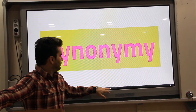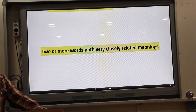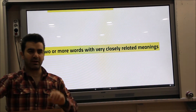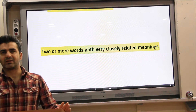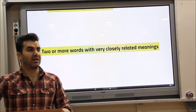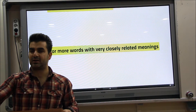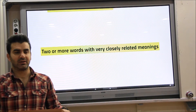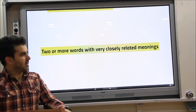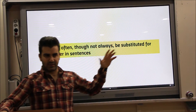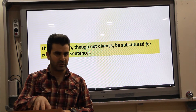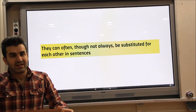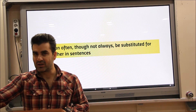Two or more words with very closely related meanings — not necessarily exact or precise meaning, but closely related meanings. When we say synonymous words, it doesn't mean they have completely identical meanings; it means they are close in meaning. Because sometimes, even though they have close meanings, they cannot be used in place of one another. They can be replaced with each other in sentences — you can use one word instead of another, you can exchange them. But this is not always the case; you cannot always do that.